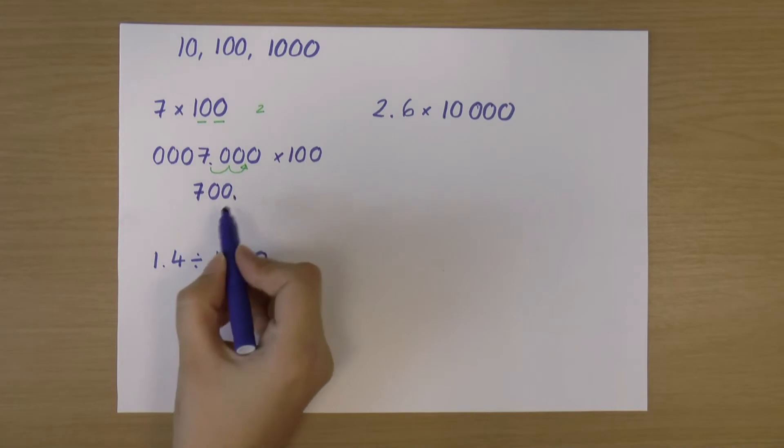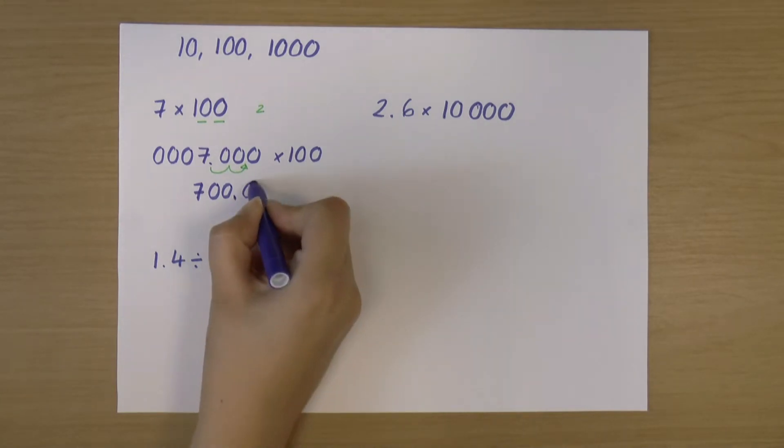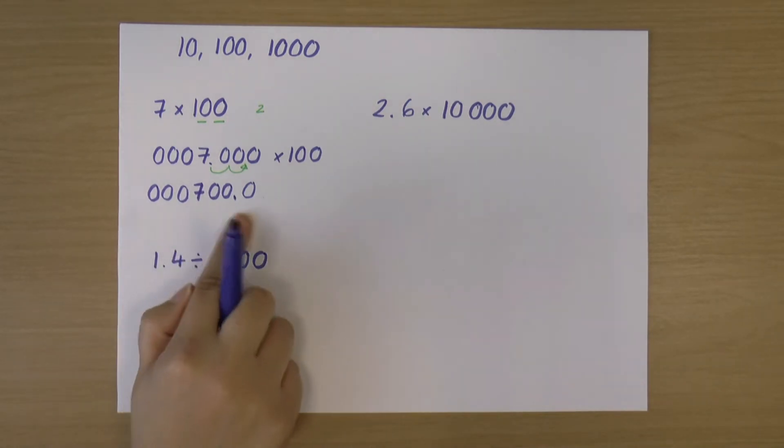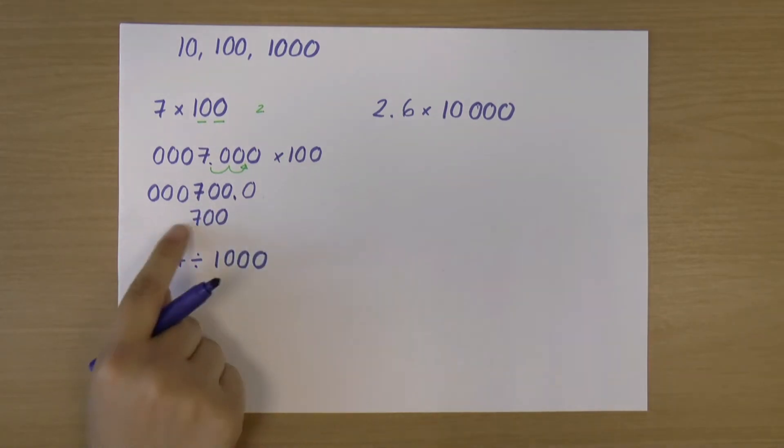So now I have moved my decimal place from there to there, which means that what I've got, if I just put in the rest of these 0s, now I've got the number 700. And that makes sense, because we know that 7 times 100 is 700.